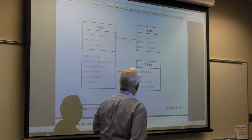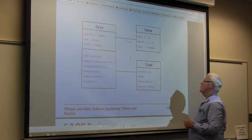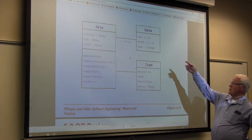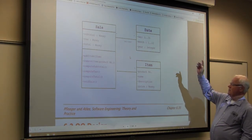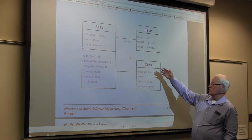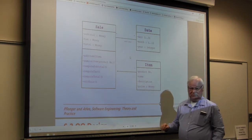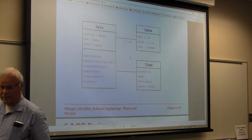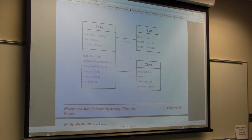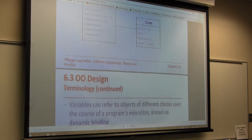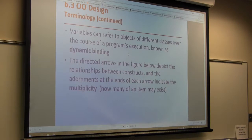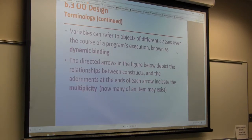We may also need to reference a date — day, month, year — and how it's going to be set up. We may want to look at actual items: product number, name, description, and price, which is a money variable. Those would then feed over into the sale object.